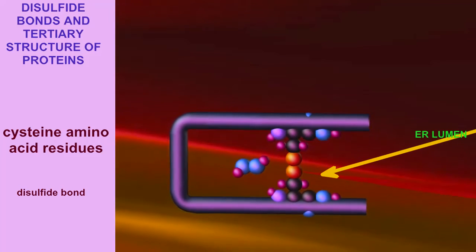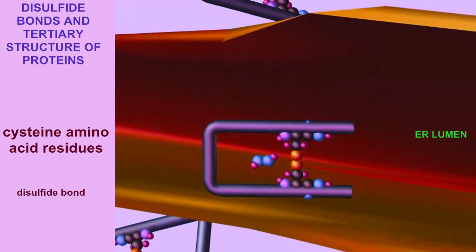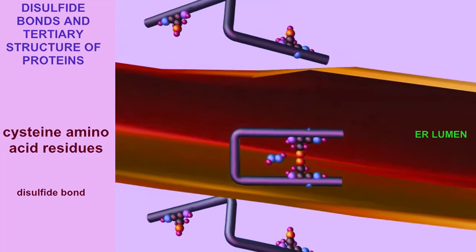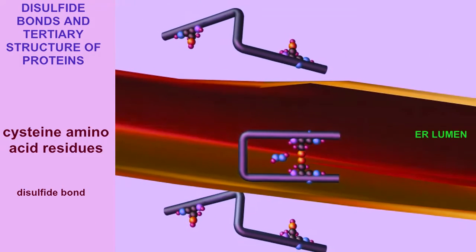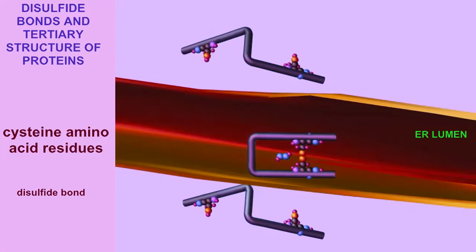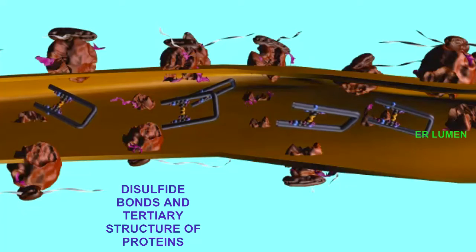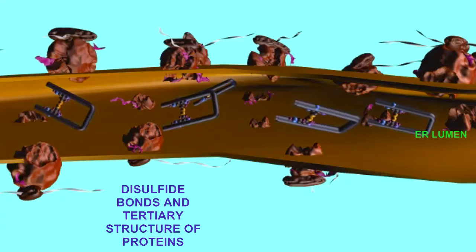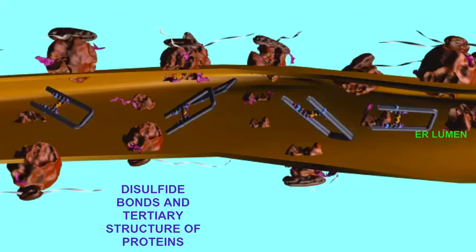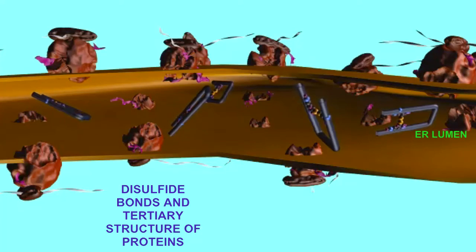This type of bond only forms in oxidizing environments, such as the endoplasmic reticulum, and does not form easily in the reducing environment of the cytosol. Thus, this disulfide bond, which is very important in the achievement of the proper tertiary structure of many proteins, occurs in the endoplasmic reticulum.